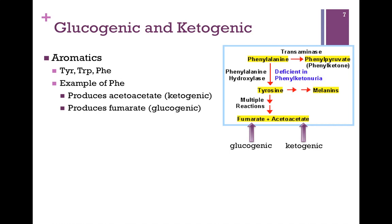Please refer to the learning outcomes to know which portions of the catabolism of amino acids you're responsible for. In other words, you don't have to memorize the table of those that are glucogenic, ketogenic, or both. But if I give you the breakdown products of the amino acid, you should be able to tell me if it's glucogenic, if it's ketogenic, or if it's both.